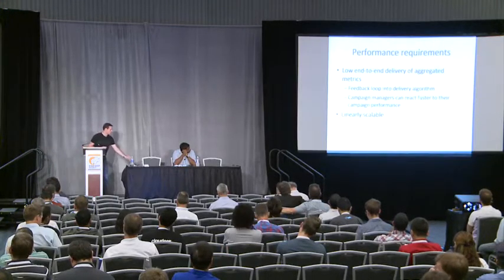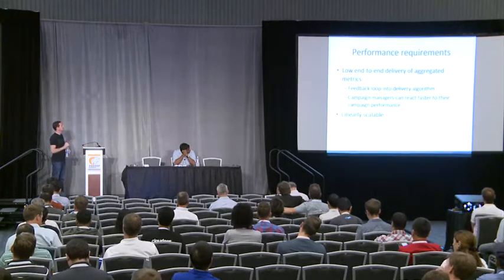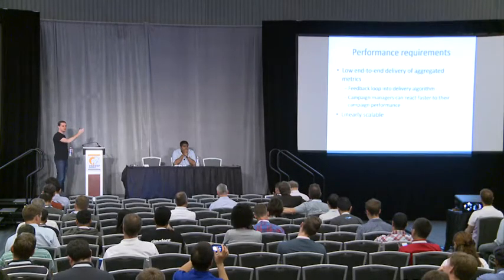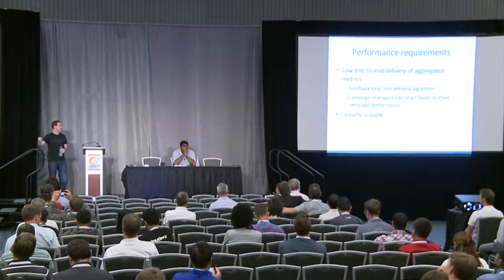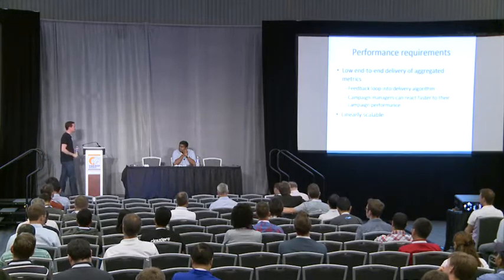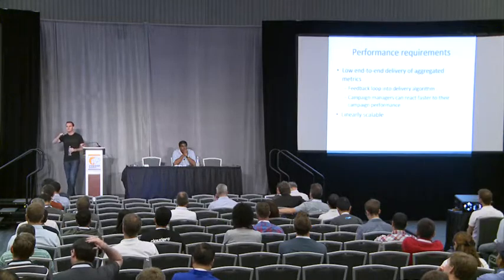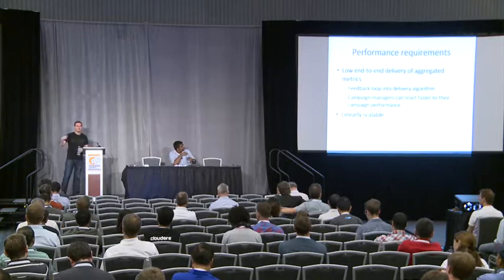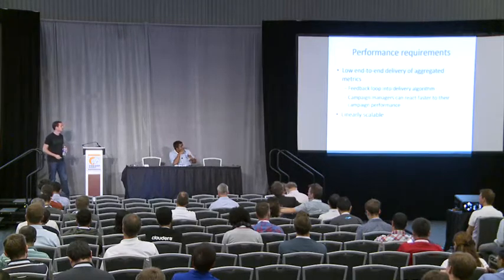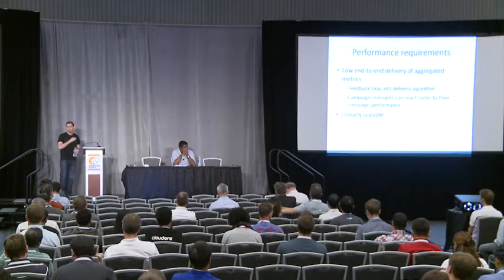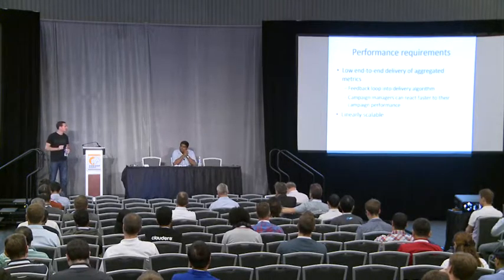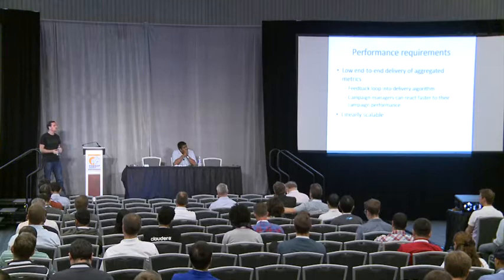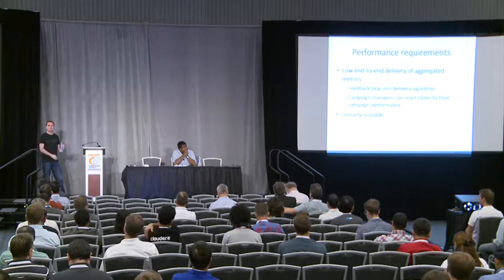In terms of performance requirements, we needed low end-to-end delivery of aggregated metrics — meaning time from event produced until event being consumed on the exhaust side, as low as possible. This was to enable the feedback loop into the decisioning algorithm on the ad serving side, as well as to give campaign managers a way to react faster to the health of their campaign. And of course, being linearly scalable — our growth rate has been very steep, and we want to make sure the bottleneck is not on the code, design, or architecture of the pipeline, but on how many resources you have allocated to the processing.